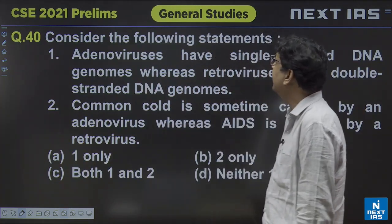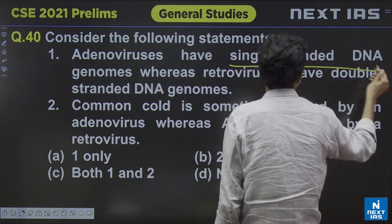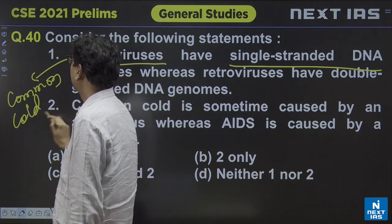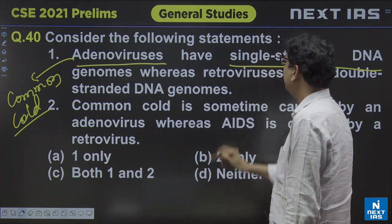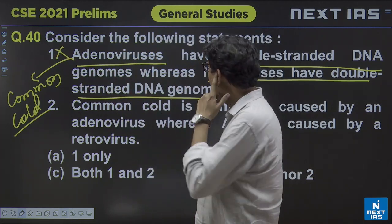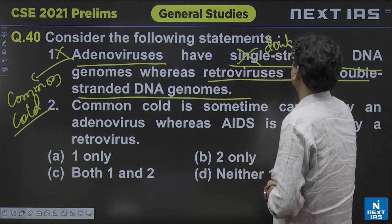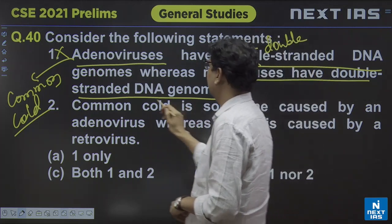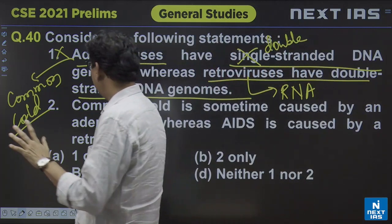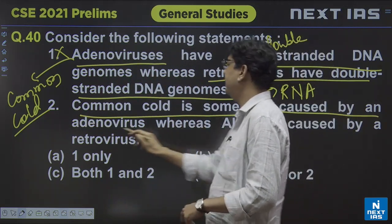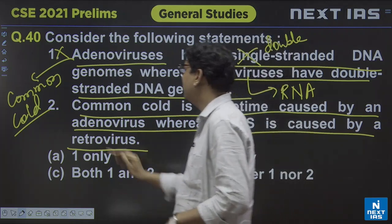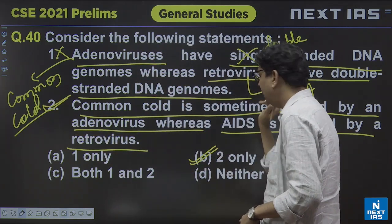Question number 40: statement 1 says adenovirus have single-stranded DNA, whereas retrovirus have double-stranded DNA genomes — this is incorrect. Adenovirus actually has double-stranded DNA, and retrovirus has RNA as its genetic material. Statement 2 is correct: common cold is sometimes caused by an adenovirus, and AIDS is caused by a retrovirus. So the answer is B — only statement 2.